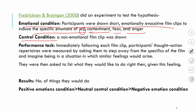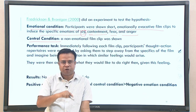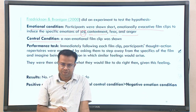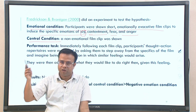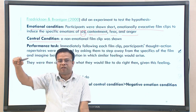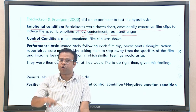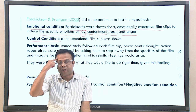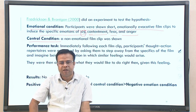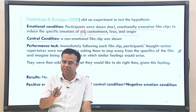Different film clips were related to different emotions — some clips induced joy, some contentment, some fear, and some anger. Participants in the control condition were shown neutral clips with no emotion involved. So different groups of participants were induced different emotions, while the control group had no emotion induced.